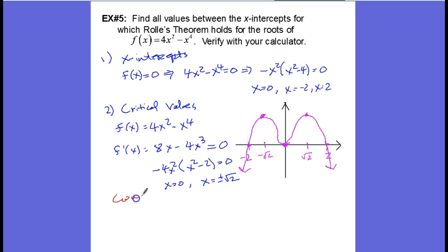So our conclusion is going to be that Rolle's theorem holds for x = 0, x = √2, and x = -√2 between the x-intercepts.